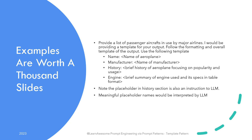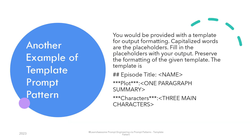Not only would the output be in your required format, but the model would also understand the instructions within your template, like in the history section. You could restrict the open-ended field by saying "Engine: <manufacturer> - <engine name>" instead of a brief summary. It's entirely up to your use case. Another example is to extract information about episodes from season one of your favorite TV show. The prompt could be: "Capitalized words are the placeholders. Fill in the placeholders with your output. Preserve the formatting of the given template. The template is — Episode Title: NAME, Plot: ONE PARAGRAPH SUMMARY, Characters: THREE MAIN CHARACTERS."